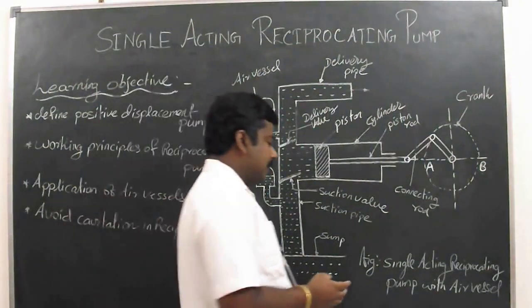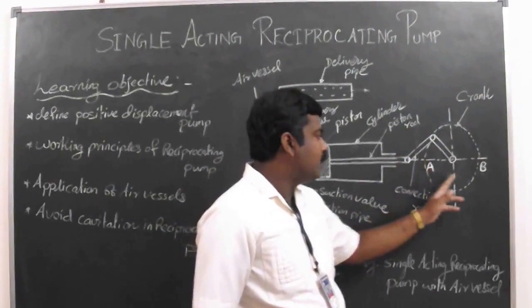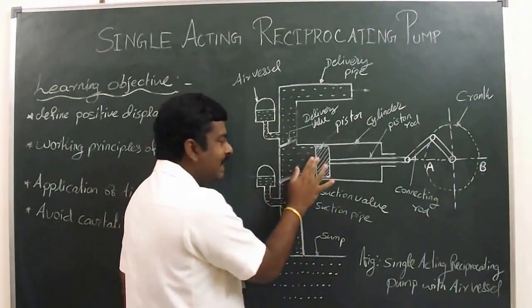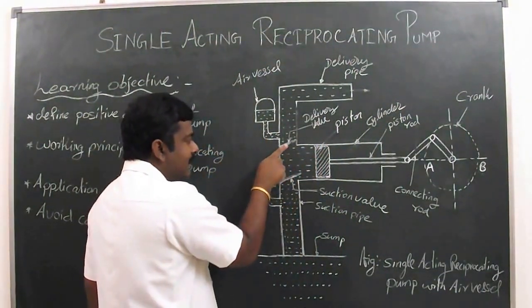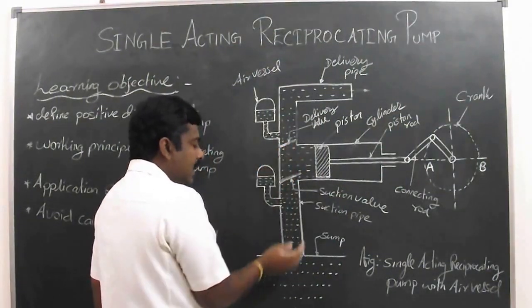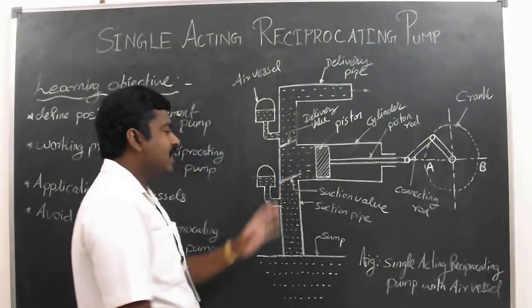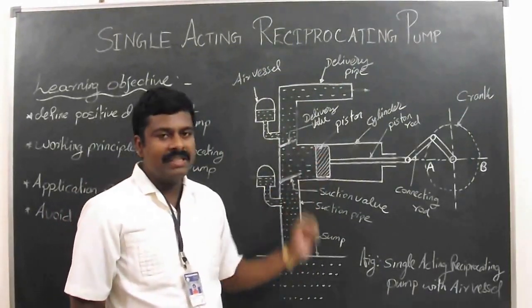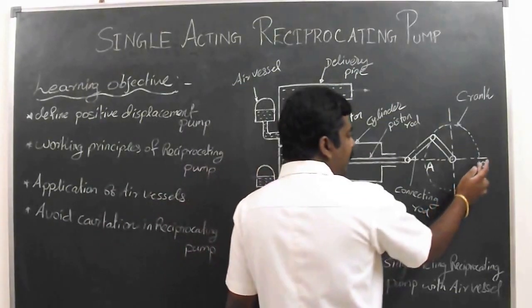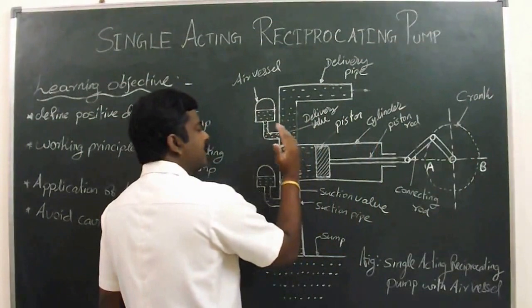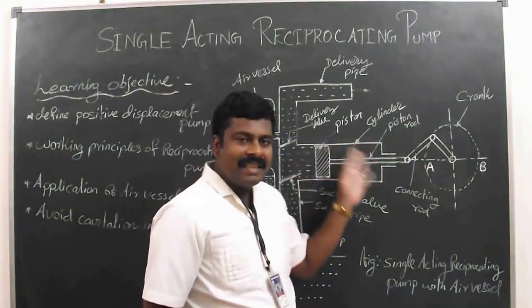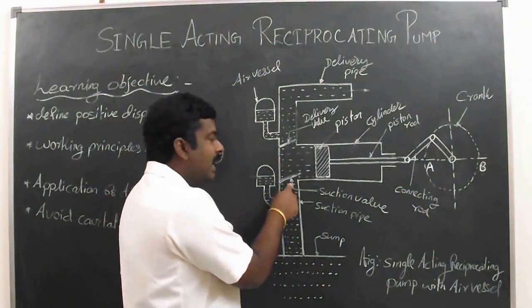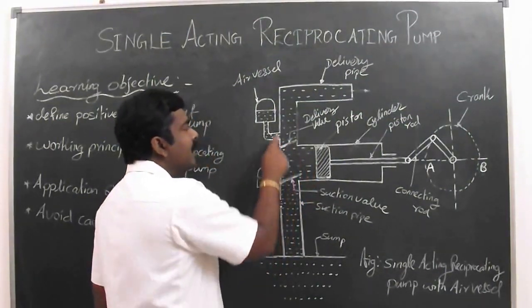The working principle of the single-acting reciprocating pump: when the crank moves from A to B, the piston moves from right to left. A partial vacuum is created inside the cylinder. At the same time, the delivery valve is closed and the suction valve is open. Water from the sump is sucked through the suction valve and enters the cylinder. Next, when the crank rotates from B to A, the piston moves and the water inside the cylinder is pushed by the piston. The suction valve is closed and the delivery valve is open, so water is delivered through the delivery valve.